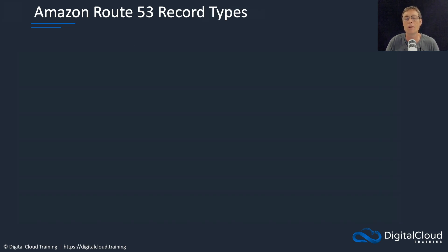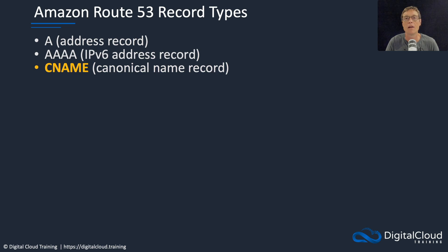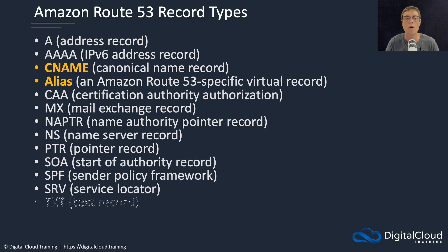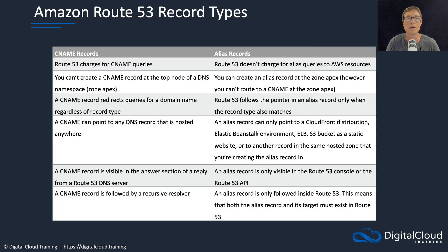It's important to understand a few record types. Route 53 supports lots of different record types, so I won't go through all of them in detail. However, it's worth pointing out the ones that are color-coded here — the CNAME, the canonical name record, and the alias. Those two come up quite often in exam questions, and you need to understand the key differences between them.